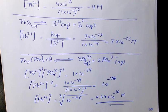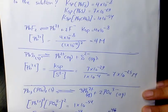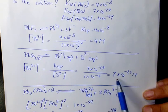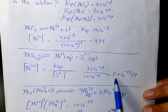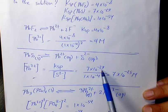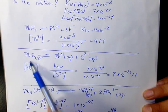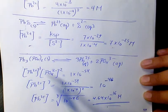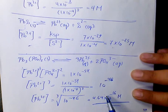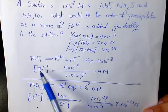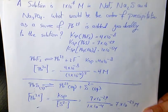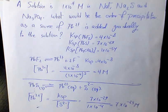Now, if you compare them, the lead phosphate concentration is the smallest one, so it's going to precipitate first. Lead phosphate precipitates first, then PbS precipitates, and after that lead fluoride is going to precipitate.